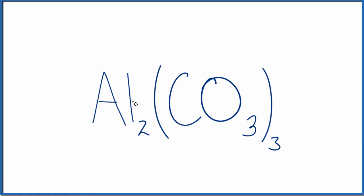So aluminum, that's a metal, and the carbonate, that's a group of nonmetals here. So we have a metal, nonmetals. This is going to be ionic, and we need to think about the ionic charge.